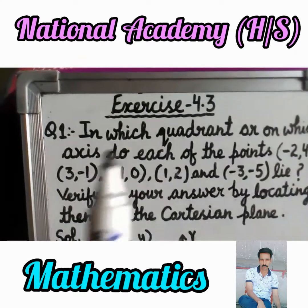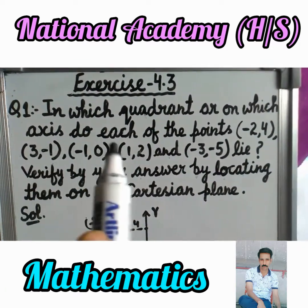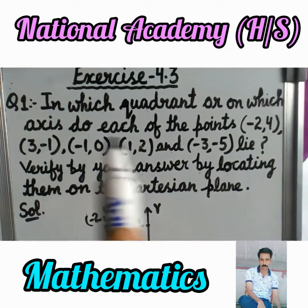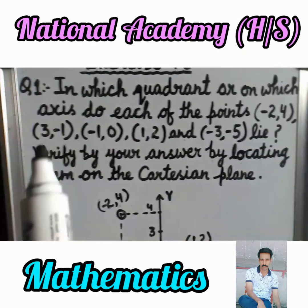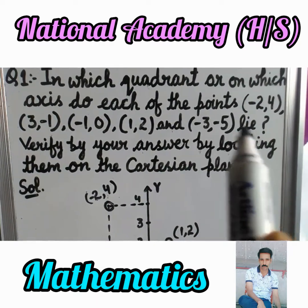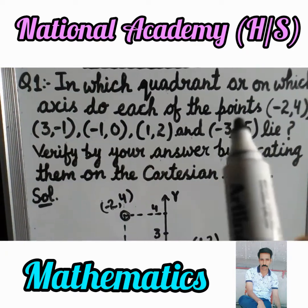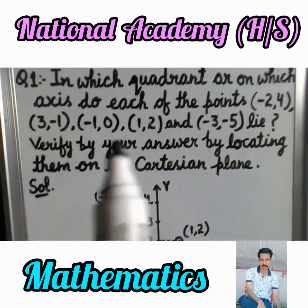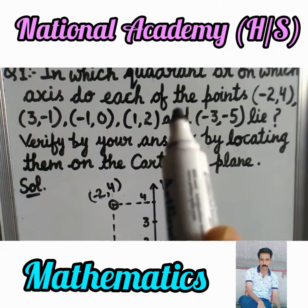Exercise 4.3, Question 1: In which quadrant or on which axis do each of the given points lie? The points given are: minus 2 comma 4, 3 comma minus 1, minus 1 comma 0, 1 comma 2, minus 3 comma minus 5. We need to identify where these points lie — in which quadrant or on which axis — and then verify by locating them on the Cartesian plane.